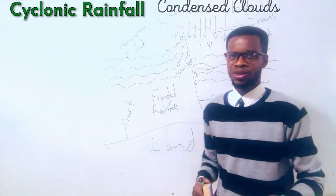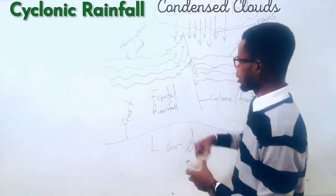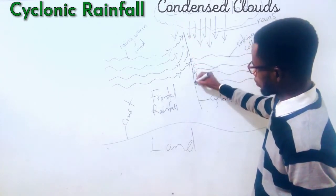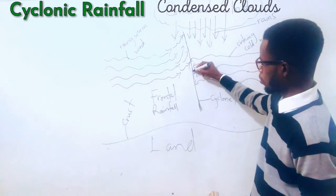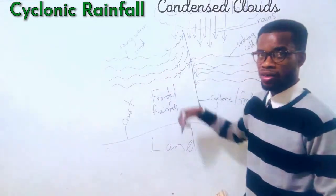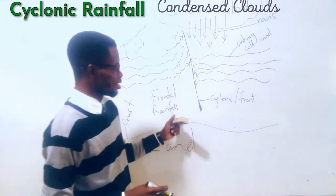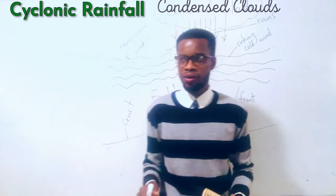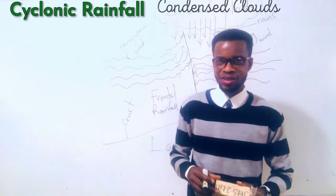It's very simple compared to the relief rainfall — they are all simple. When you get these explanations, write them down, put the words together, and then illustrate with a nice diagram. Make sure your arrows are clearly drawn showing that one wind is rising and the other is sinking. I believe this lesson helps a lot, and you can see the difference between relief rainfall and cyclonic rainfall. I'll be coming your way with a third type of rainfall in another session. For now, keep watching GCL Tutorials.